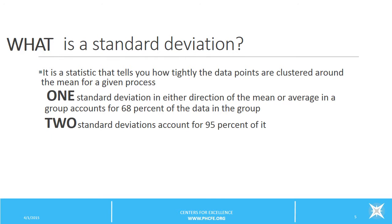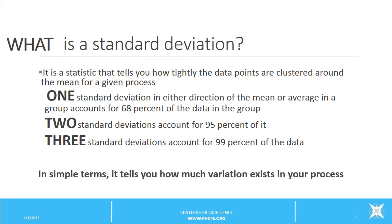Two standard deviations account for 95% of it. And three standard deviations account for 99% of the data. Simply, the standard deviation basically tells you how much variation exists in your process. And remember that all processes have a certain amount of variation.